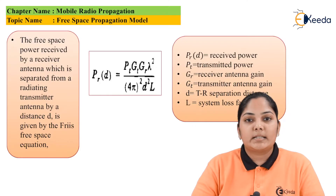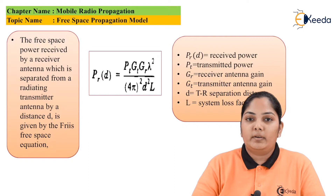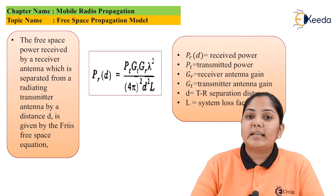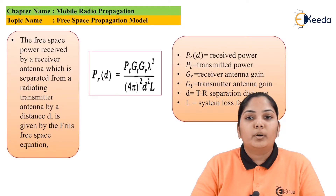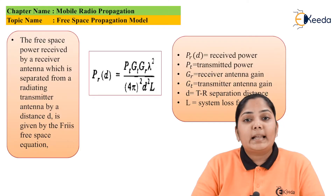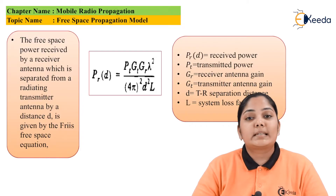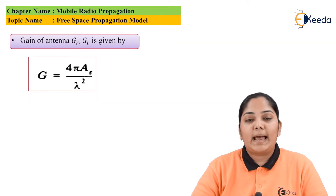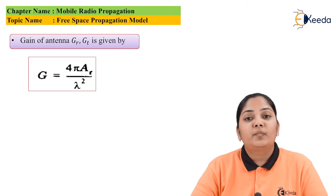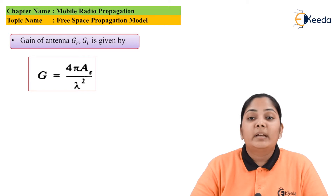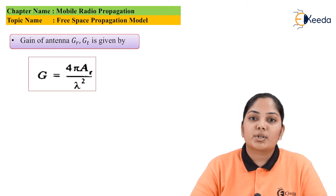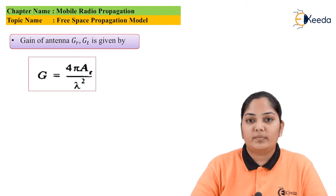Here, Pr(d) stands for the received power at distance d, Pt stands for the transmitted power, Gr is the receiver antenna gain, Gt is the transmitter antenna gain, λ is the wavelength, d² is the square of the distance between the transmitter and receiver, and L stands for the path loss — also known as the system loss factor. The antenna gains Gt and Gr are also given by 4πAe / λ², where Ae stands for the antenna aperture, which depends on the dimension or size of the antenna.